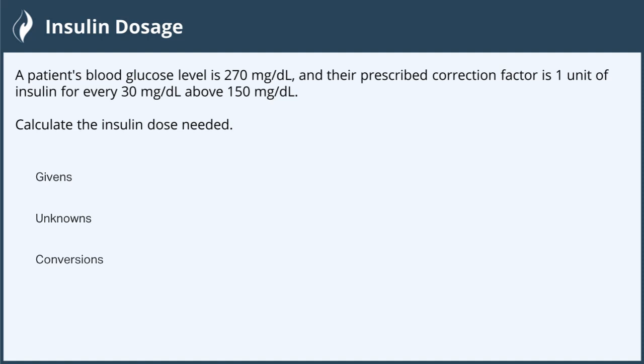A patient's blood glucose level is 270 milligrams per deciliter, and their prescribed correction factor is one unit of insulin for every 30 milligrams per deciliter above 150 milligrams per deciliter. Calculate the insulin dose needed.